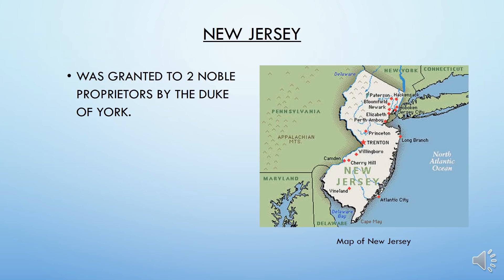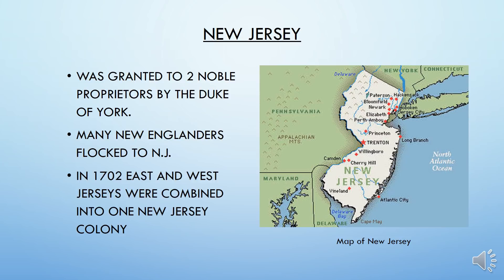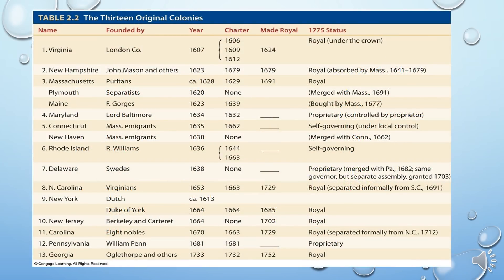Then we come to New Jersey — a very simple colony. It was granted to proprietors by the Duke of York. Many New Englanders came to New Jersey basically for economic reasons. In 1702, East and West Jersey were combined into one colony called New Jersey. Delaware is also going to become part of our colonies later on, though it's not overly significant and never really makes its way onto the AP exam.